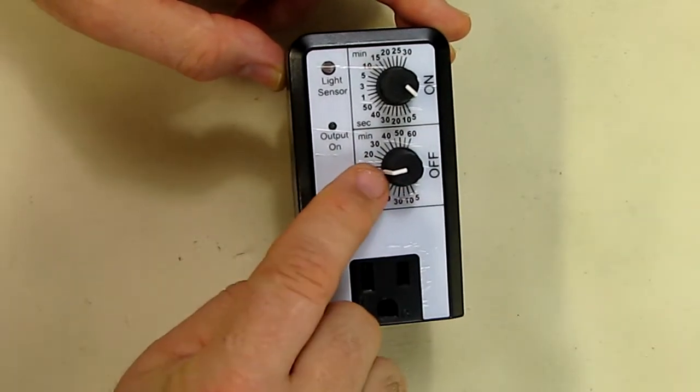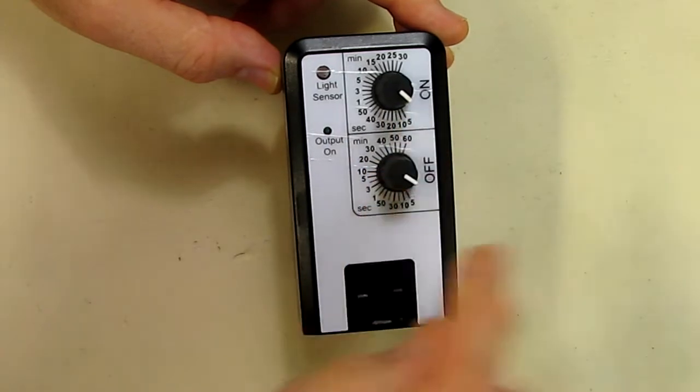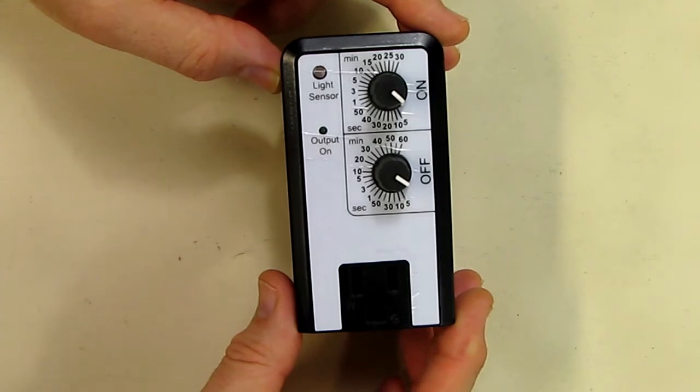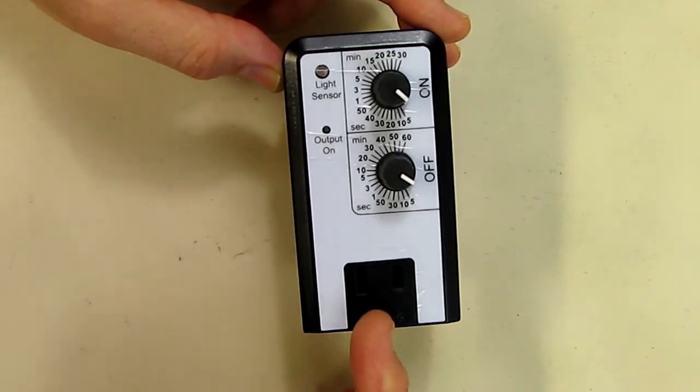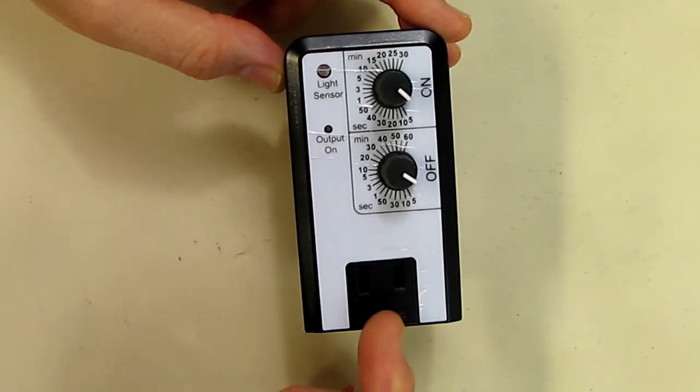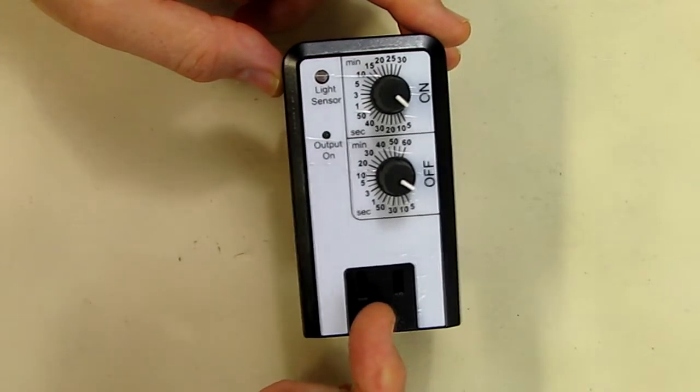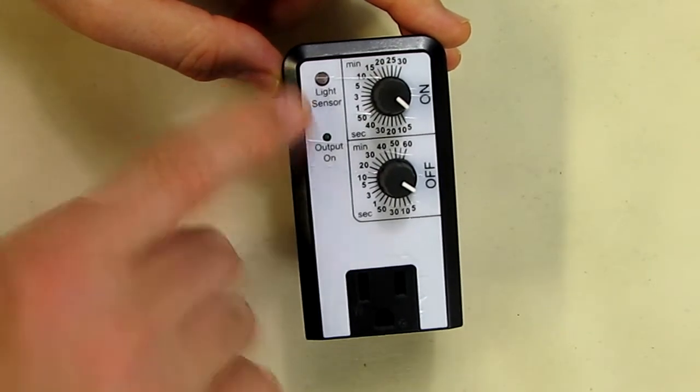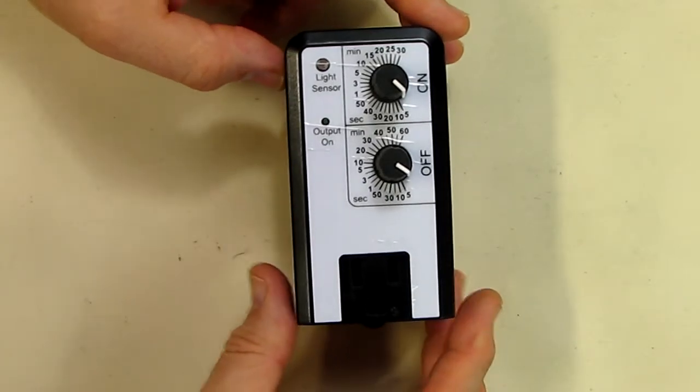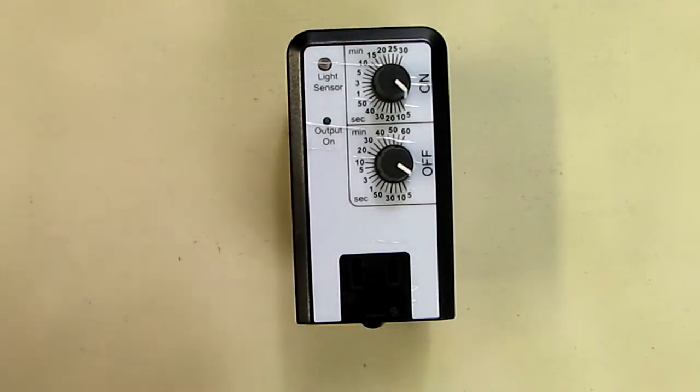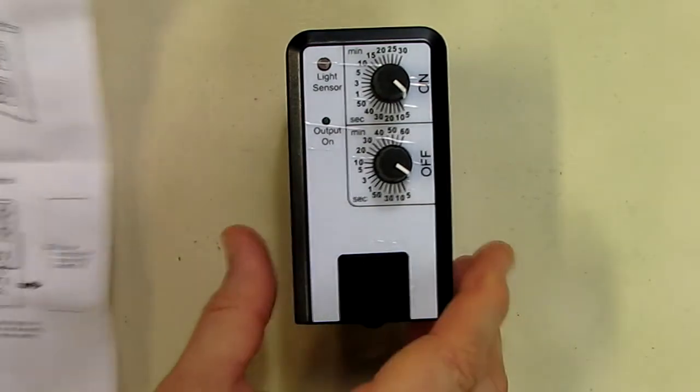The output LED comes on when this thing supplies the switch. It's 15 amp power, can run up to one horsepower motor. You notice there's a light sensor right there, that's to determine daylight versus night and we're going to test that function now.